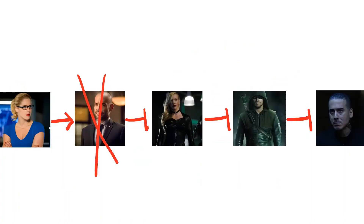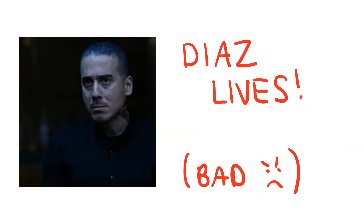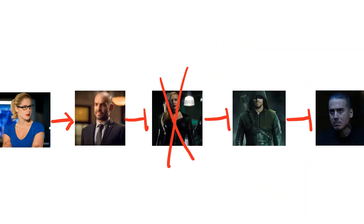Now if Quentin was gone, it would be similar to the scenario in which Felicity was gone. Quentin couldn't inhibit Laurel, therefore Laurel would inhibit Oliver, and Oliver would not inhibit Diaz. Meaning Diaz lives, sadly, once again.